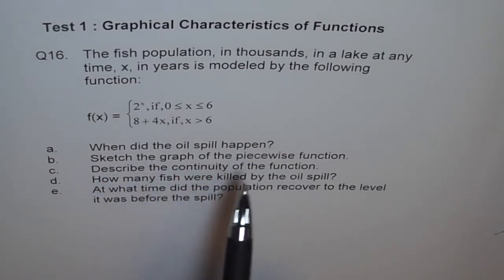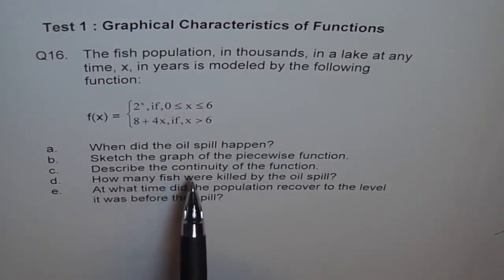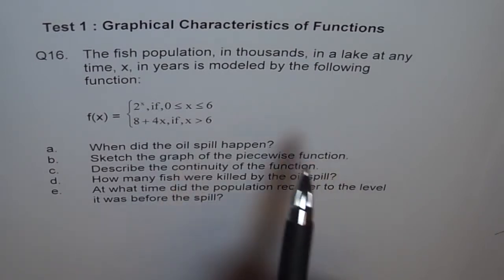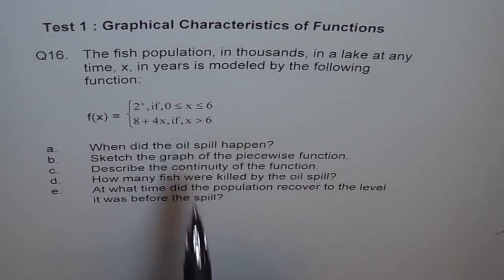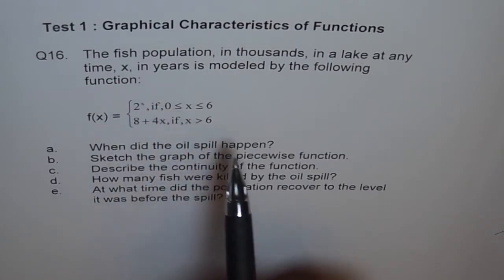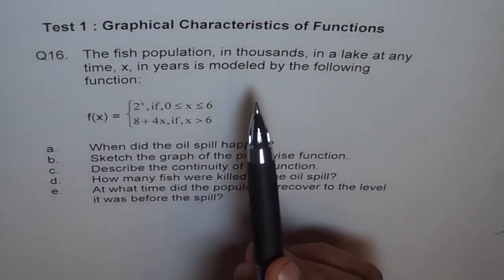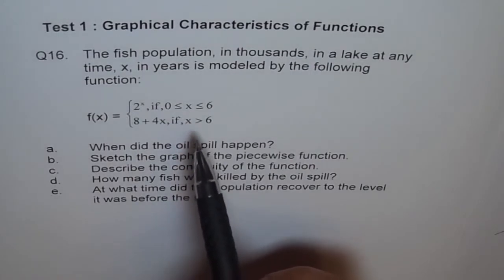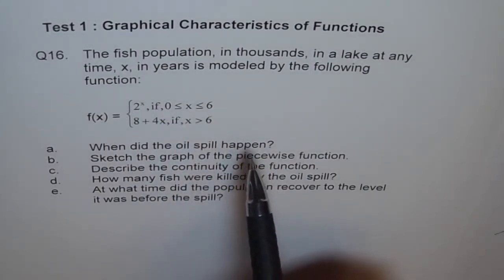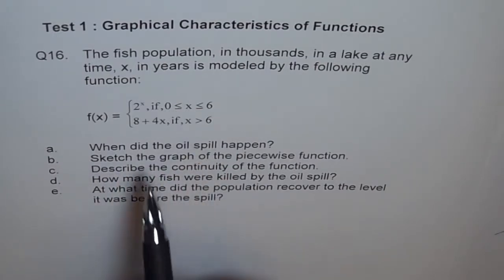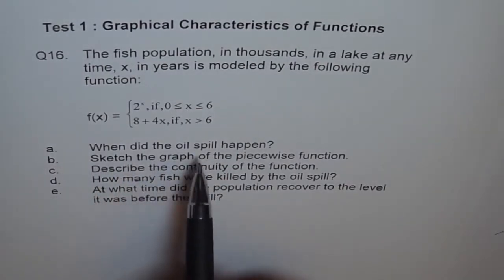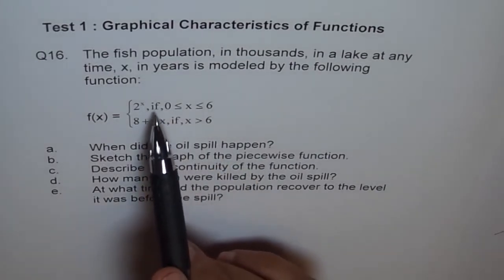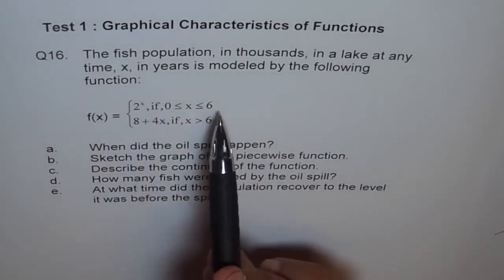When did the oil spill happen? Sketch the graph of the piecewise function. Basically in the function which we have defined about the fish population, I have not mentioned that because of the oil spill the population decreased after 6 years. So part A asks when did the oil spill happen. The reason for the change in function is because of the oil spill.